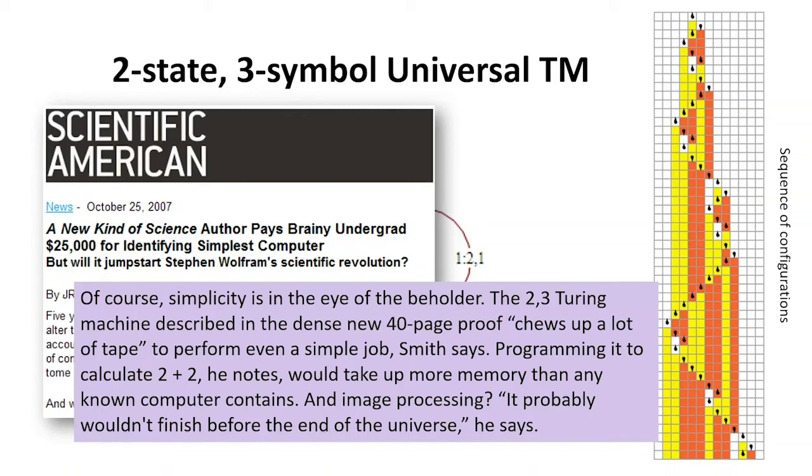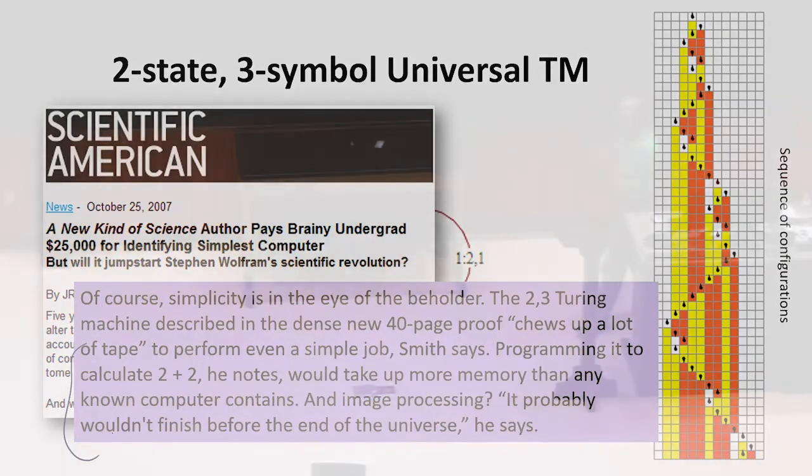This is not really a practical universal machine. Turing machines in general are not supposed to be practical. There's a 40-page proof. And if you actually wanted to do a computation like 2 plus 2 with this universal machine, you'd be working on it for years. I don't know if you could finish 2 plus 2, but I wouldn't try it.